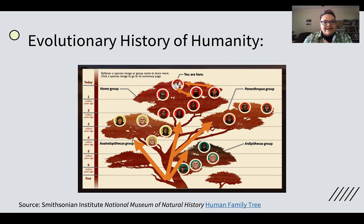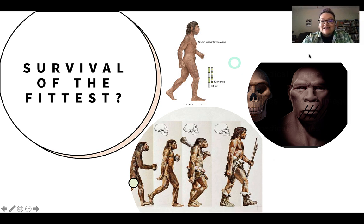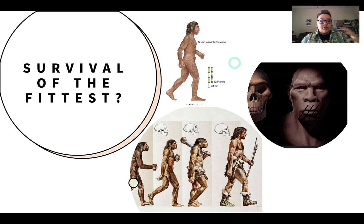So that evolutionary history of humanity is not nice and neat and clean — it's not a simple tree. There's lots of intermarrying. The diagram of survival of the fittest doesn't really fit. This probably represents Homo Neanderthalus, but actually Homo Neanderthalus was totally separate — not a step in the process, as was Denisovan. These are reconstructions of what they may have looked like based on surviving skulls, but artists have to make a lot of interpretive leaps.